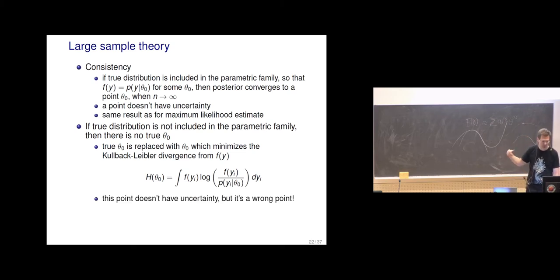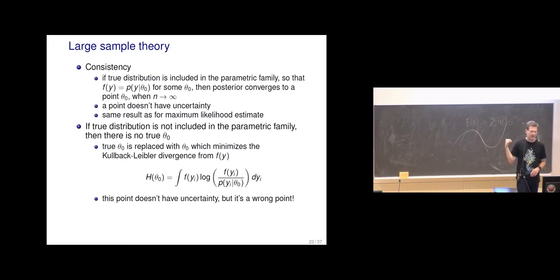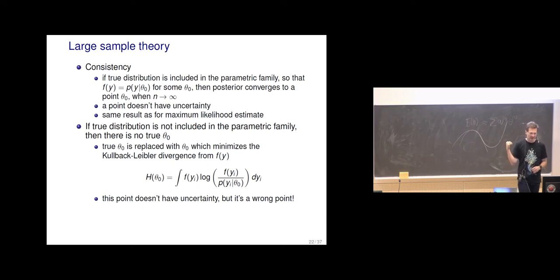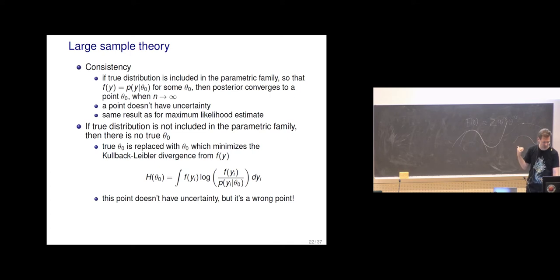It's also not always easy to test this KL thing. Since we don't know the true distribution, we can't know how far away we are or how big the KL divergence is — even though we know we're choosing the theta-0 that minimizes it. Without additional checks we don't know how wrong we are.